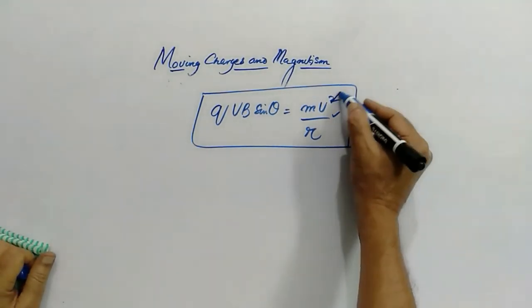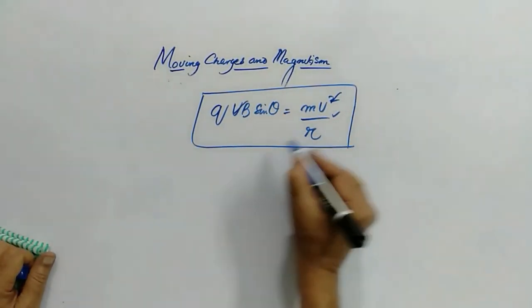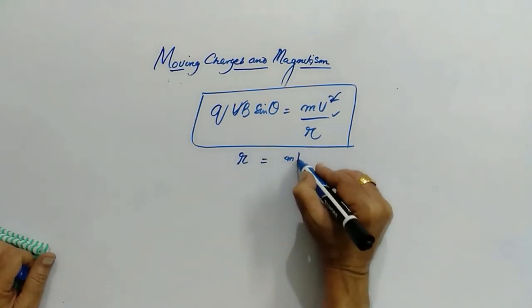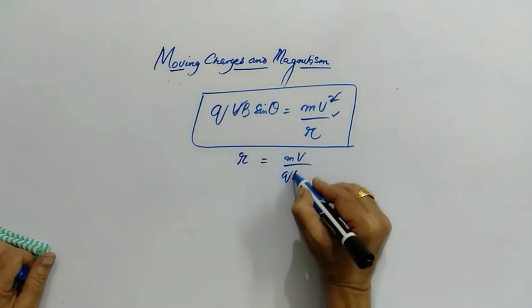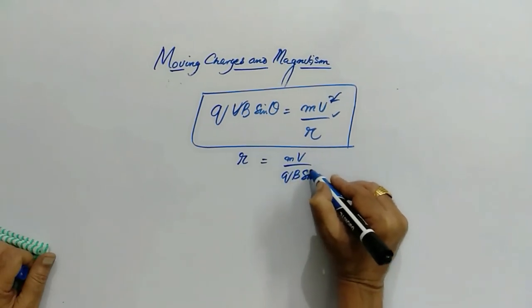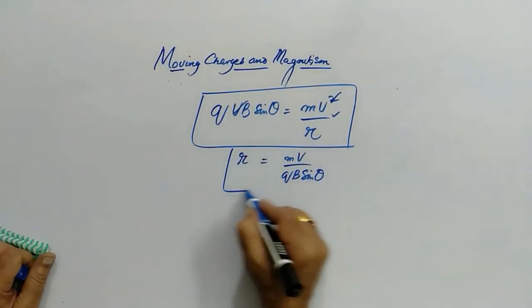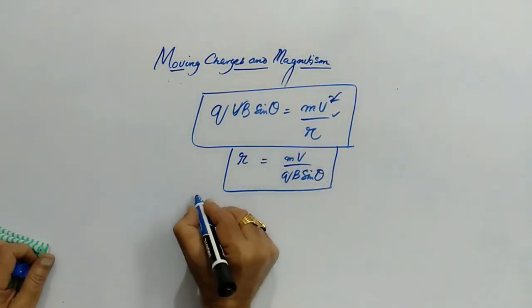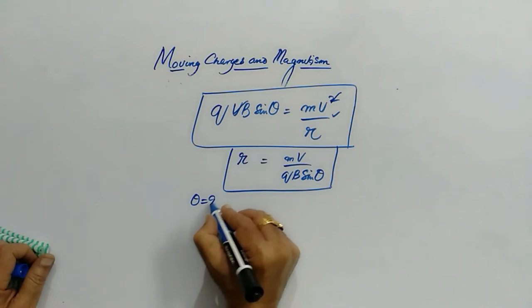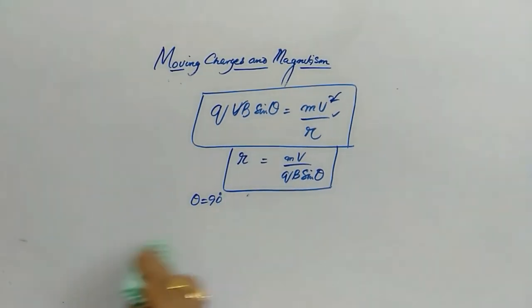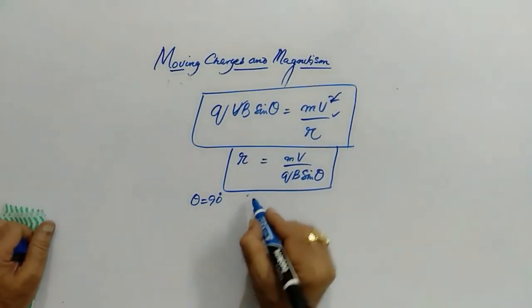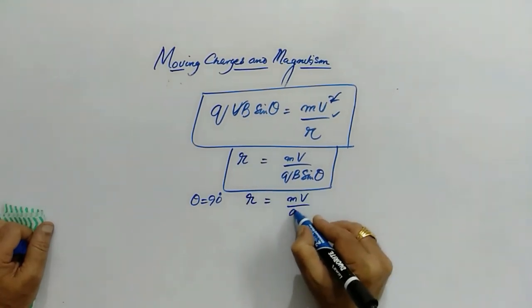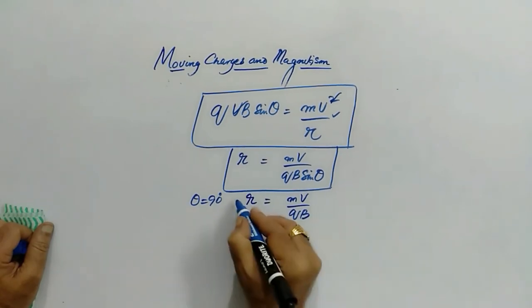Cancelling v from both sides gives r = mv / (qB sinθ). When force is maximum — at θ = 90° — sinθ = 1, so the radius simplifies to r = mv / qB.